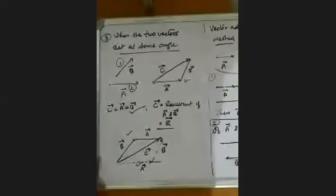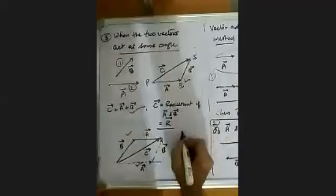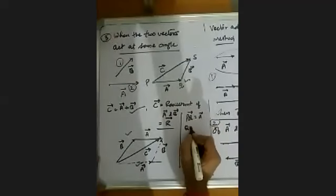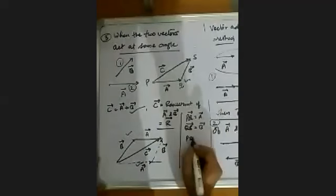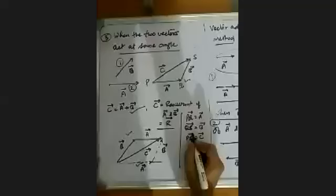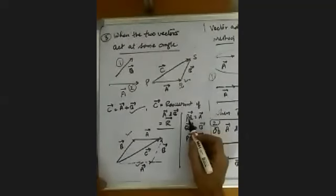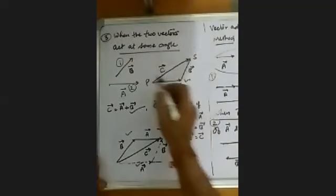If I label this point P, this is Q, and this is S, then the PQ vector is A vector, QS vector is B vector, and PS vector is C vector. A is represented by PQ vector, B by QS vector, and C by PS vector. Now let's summarize this and state the result.